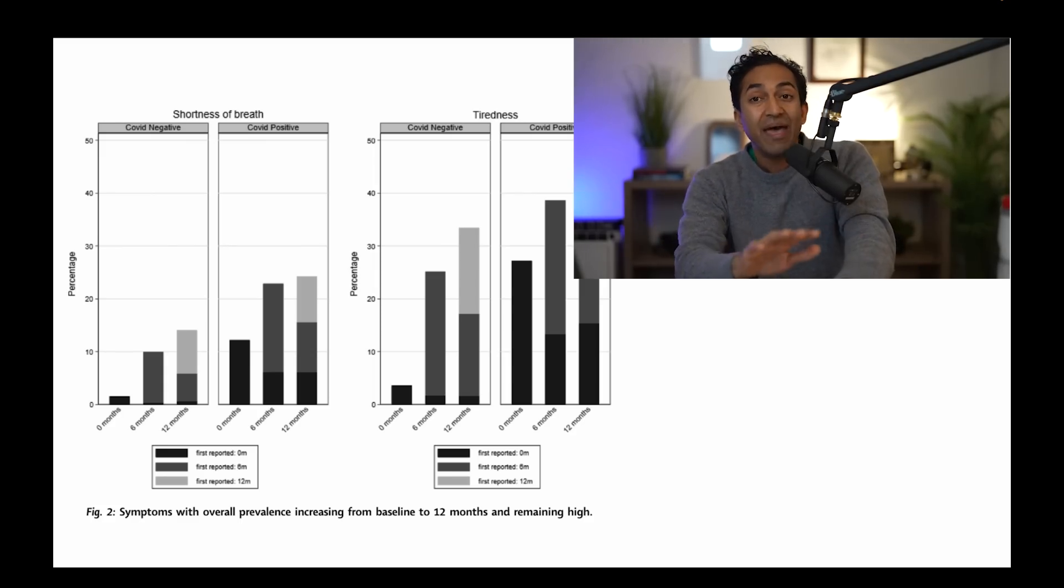We are putting out a message that long COVID is a permanent, disabling, mass disabling event, I've heard it called. What they're saying is that the people who had it at baseline, they're getting better. And there are these new people who suddenly report this symptom of shortness of breath or tiredness. That's very different than the same people having it for a long period of time.